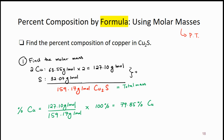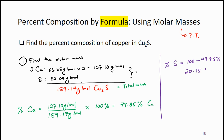The percent of sulfur is super easy to find. Percent of sulfur is equal to 100 minus 79.85%, and that's going to be 20.15% sulfur. So, if you are given a formula and no numbers, use the periodic table to find the molar mass of the compound, then use the mass of each element over the total molar mass to find the percentage of each element. The periodic table is your friend in this kind of problem.